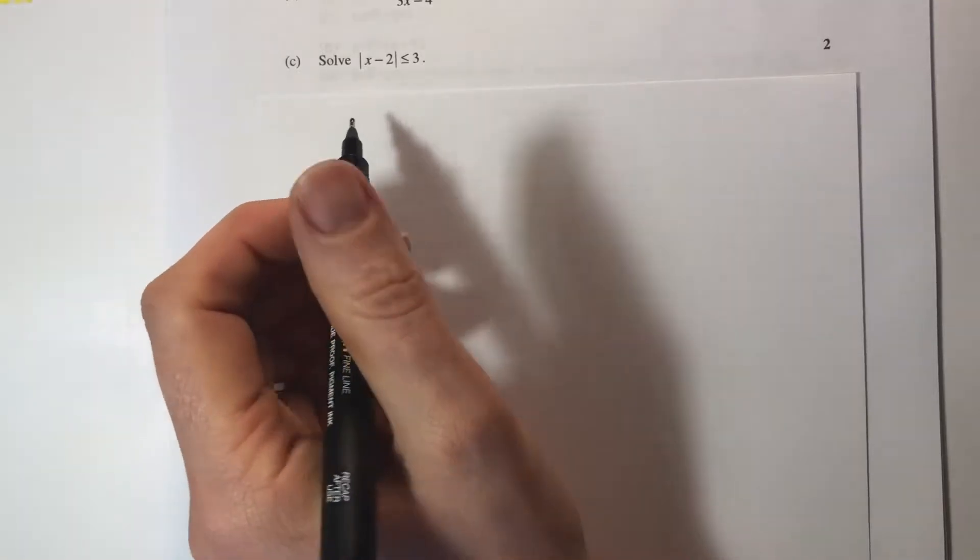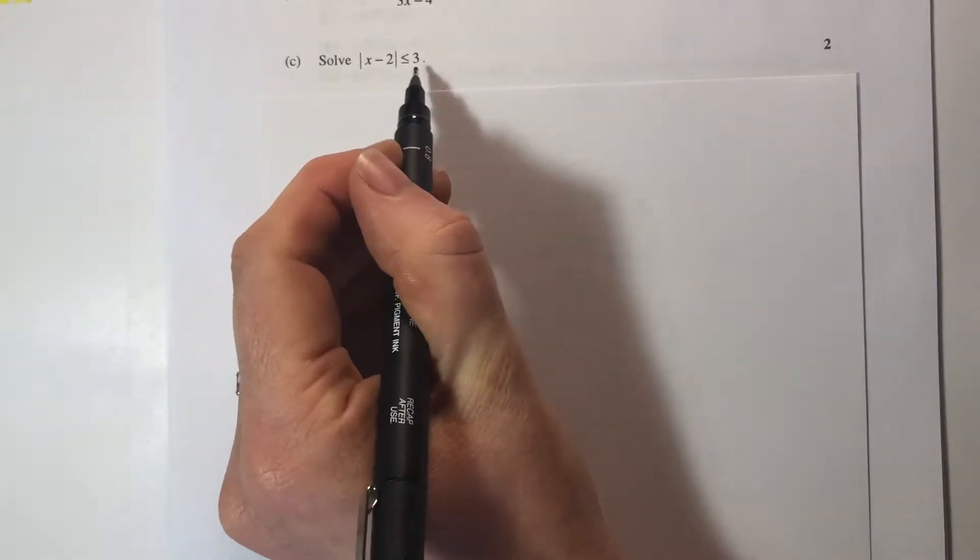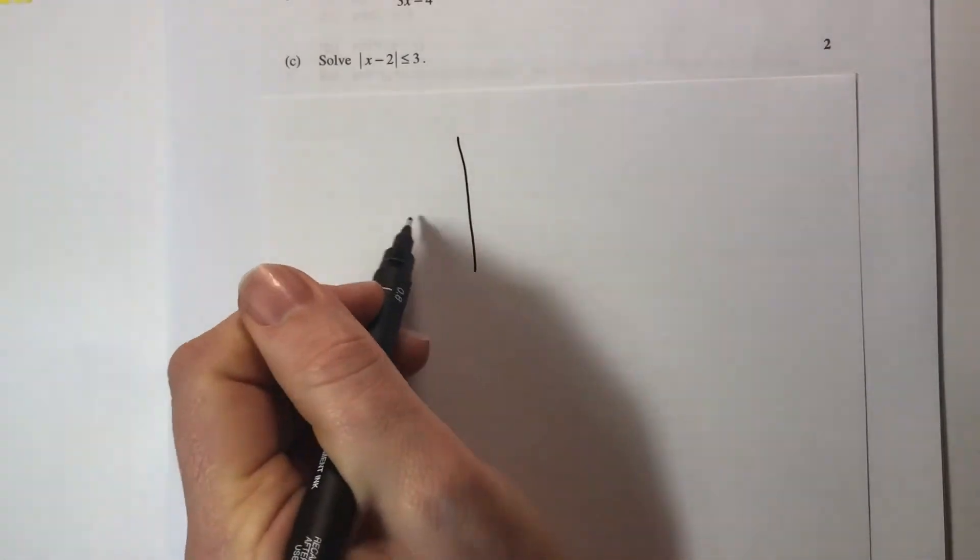To solve an absolute value question, I'm actually a fan of graphing this as a line and that as a line on my coordinate axis.